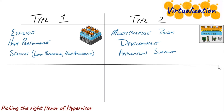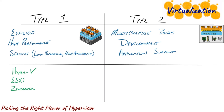Let's talk about some of the actual names of software you might encounter with type one and type two hypervisors. In the world of type one hypervisors, you may encounter Microsoft Hyper-V, VMware's ESXi (which used to be called ESX), and Citrix XenServer. On the type two side, you might run into Oracle's VirtualBox, VMware's Fusion, VMware's Player, or VMware's Workstation.